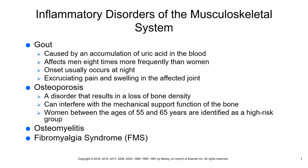When you hear the word tophi, your mind should automatically go to gout. How did a patient develop gout? Because purines found in some foods are typically broken down into uric acid by the liver. For some reason, that uric acid is not excreted properly from the body, or the patient is consuming way too many high-purine foods in their diet, leading to gout. Tophi is just a mass of those uric acid crystals accumulating.